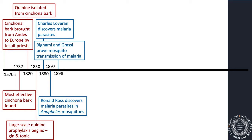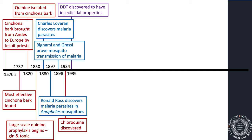Their experiments were kind of crazy — they put a person with malaria and mosquitoes in one room, with a tube that mosquitoes could travel through to the next person in the next room, and just watched the person get infected. In 1934, the U.S. military developed the drug chloroquine, a derivative of quinine. And in 1939, DDT was discovered to have insecticidal properties — you may have heard of it from Silent Spring.